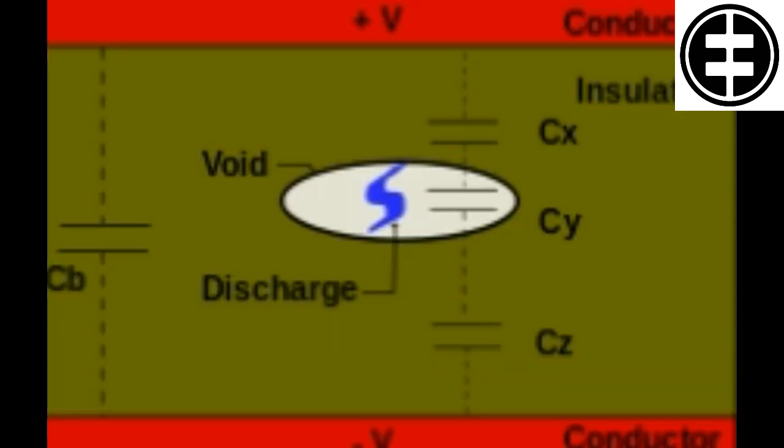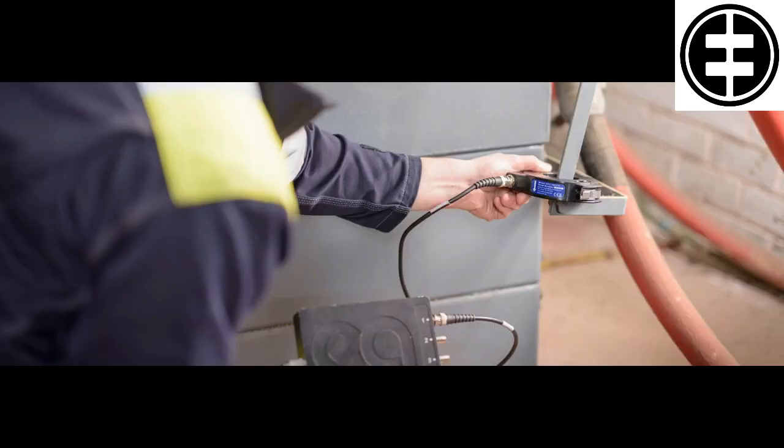Internal PD generally occurs in microscopic air-filled voids that remain inside the insulation, with the number and size of the voids depending on the procedures followed during manufacturing. Charges build up around the voids and when the local electric field stress across a void exceeds the breakdown field stress, a discharge occurs that short circuits the void. Special equipment is required to detect and measure internal PD.